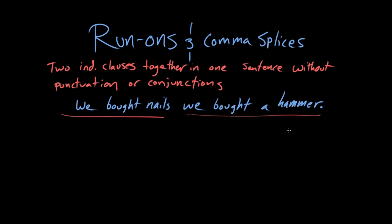Now there are a couple of different ways we could make this a legal sentence, but right now as it stands, this is a run-on. So there are a couple ways we could fix this sentence. One way would be just to add a semicolon in there. So you've got two independent clauses: we bought nails, semicolon, we bought a hammer.